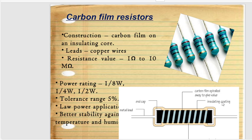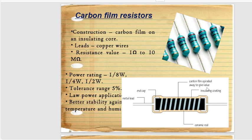The second type of fixed value resistor is the carbon film resistor. Its construction consists of a carbon film on an insulating core, with copper wire leads. The resistance value is between 1 ohm and 10 mega ohm. The power rating is 1/8 watt, 1/4 watt, and 1/2 watt. The tolerance range is 5%. It is used for low power applications and has better stability against temperature and humidity. Its structure includes a ceramic rod, carbon film, spiral cut to give the resistance value, an insulating coating for protection, end caps, and metal leads.